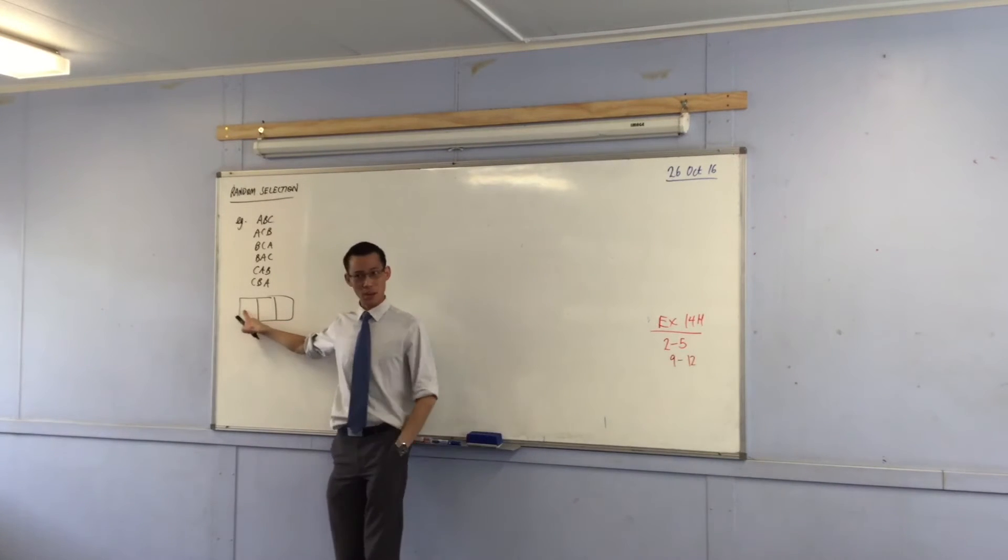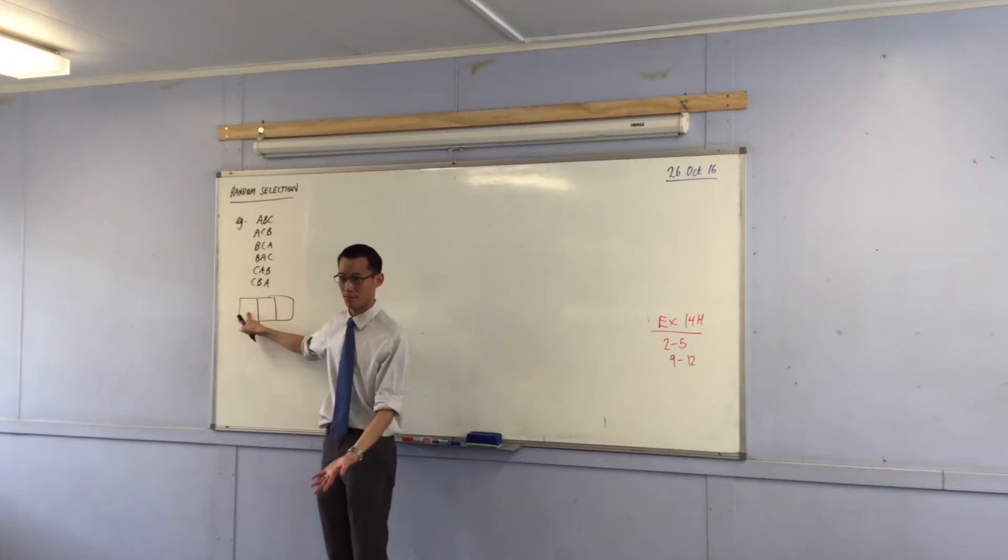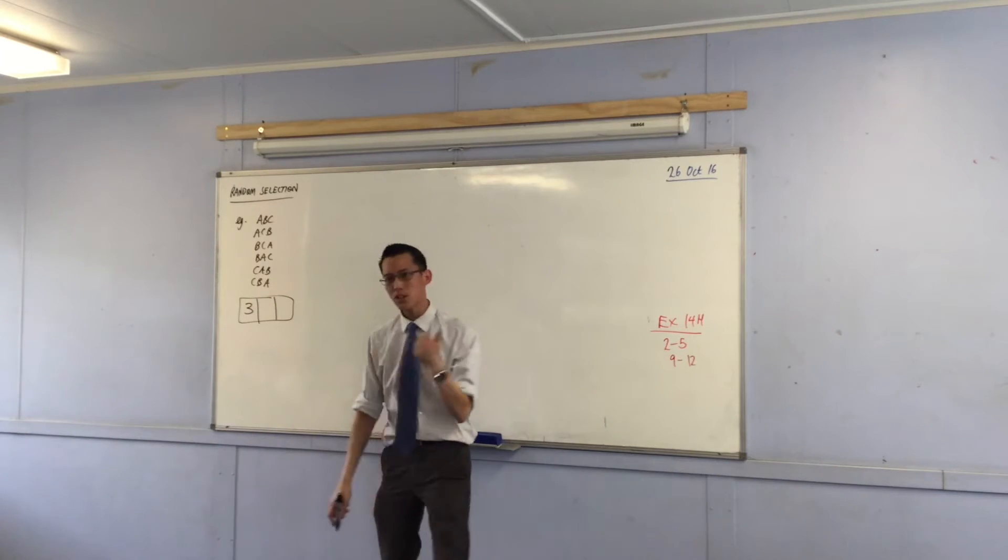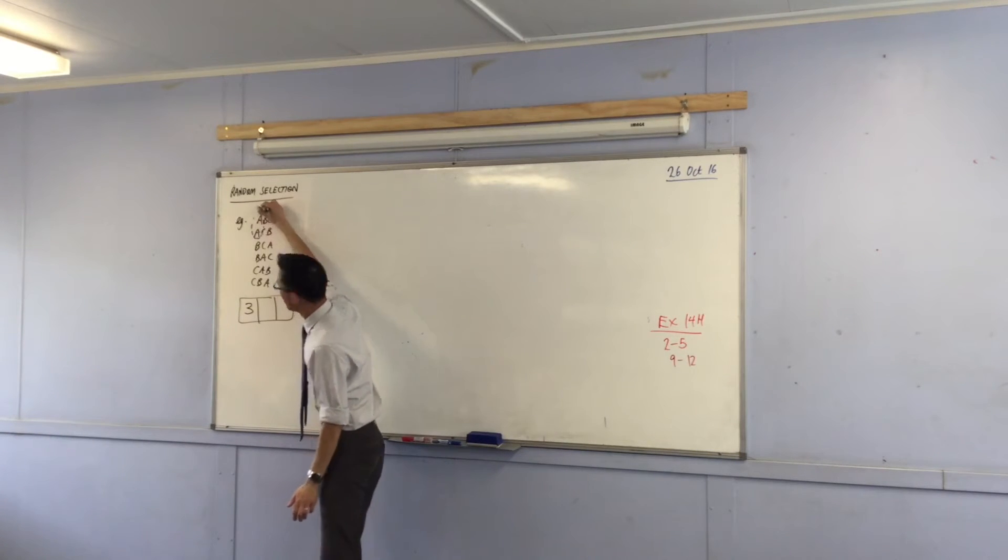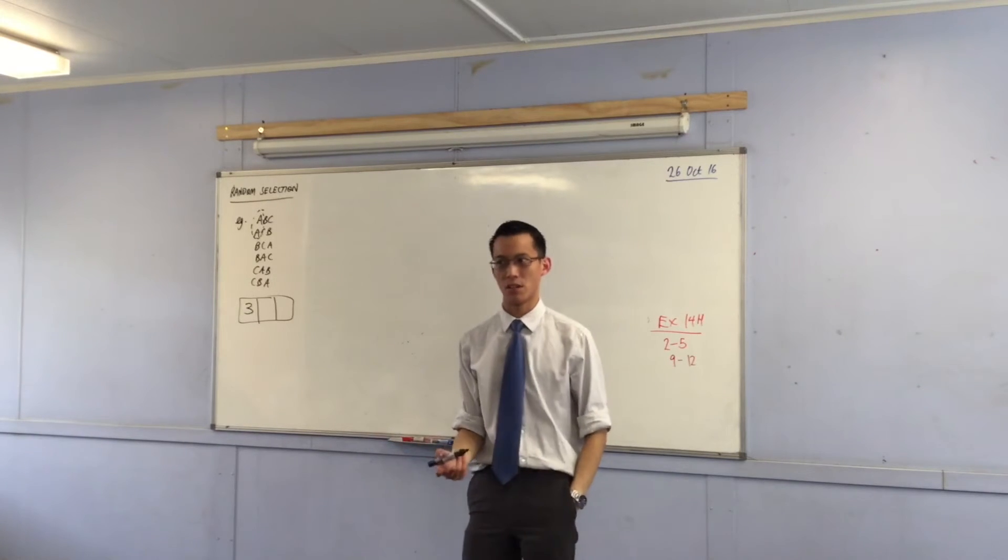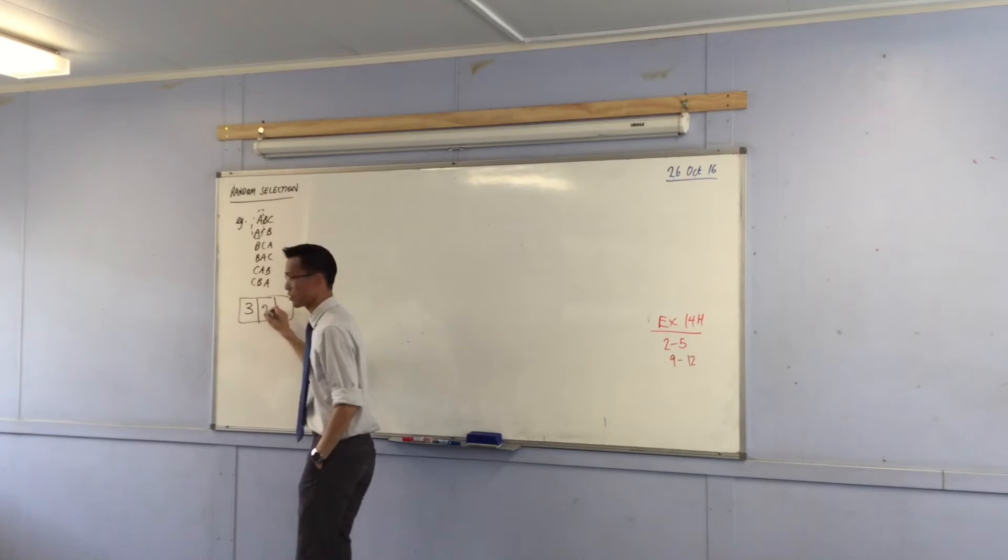This first song that you're going to play, before anything has been put down, you've got how many choices for that first song? Three. It's A or B or C. So there are three choices. Once you've picked one of them, suppose you pick A as your first one. How many choices do you have for the second song? Two. There are two left. And you can see them there. B or C. So there are two choices here.